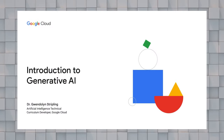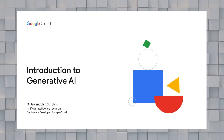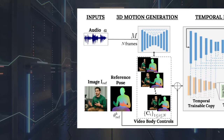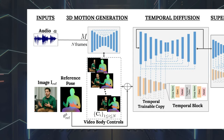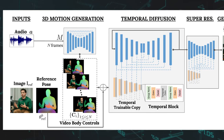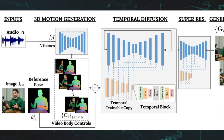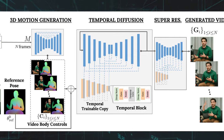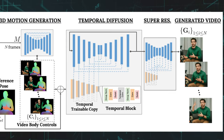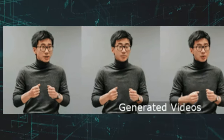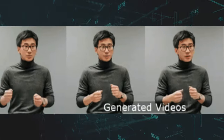So, how does Vlogger work its magic? It uses a special type of AI called a generative model. This model takes audio recordings and transforms them into videos that show body movements and facial expressions. It can also control how these things change throughout the video. Vlogger also excels at keeping the person in the video looking consistent — for example, their eyes will always look like eyes, no matter how much they move around.